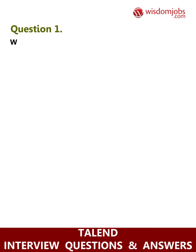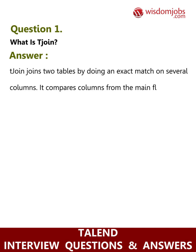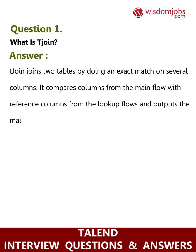Question 1: What is T-Join? Answer: T-Join joins two tables by doing an exact match on several columns. It compares columns from the main flow with reference columns from the lookup flows and outputs the main flow data and/or the rejected data.